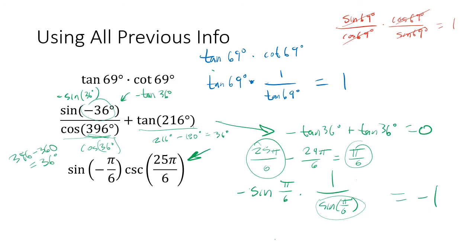This is why all these properties and identities are useful — we will be using things like this continuously throughout the semester. If there's one thing to take away from this video: the Pythagorean identity is super important. The reciprocal and quotient identities are natural to know. The even and odd properties and the periodic properties are important. The domain and range we'll continue to talk about. That ends section 2.3.